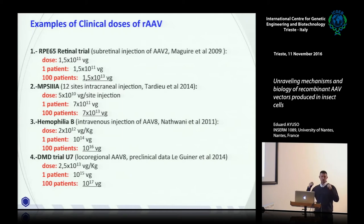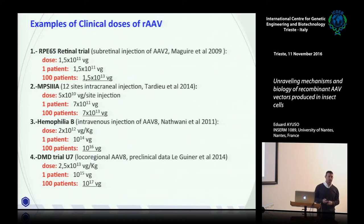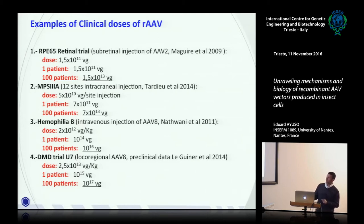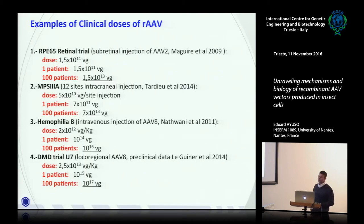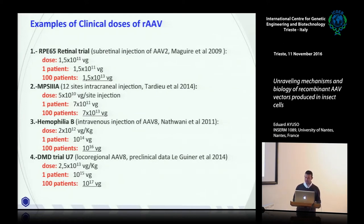For diseases that are truly systemic and affect many muscles, like Duchenne muscular dystrophy, pre-clinical data from our laboratory show that in animal models you need more than 10¹³ vector genomes per kilogram to achieve efficacy — one log higher. So one patient requires 10¹⁵ vectors, and 100 patients makes 10¹⁷ vectors. These are really scary numbers.